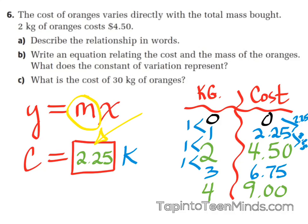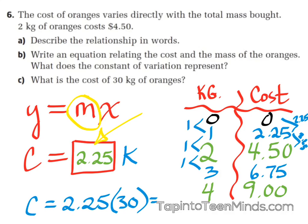How about 30 kilograms of oranges? Megan says $67.50. She takes 30 kilograms, doubles it to 60, and adds a quarter of 30 which is $7.50, giving $67.50 total. If we sub that into our equation: cost equals 2.25 times 30, punch that into the calculator, and you get $67.50. Very good job.